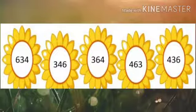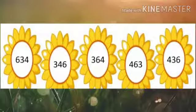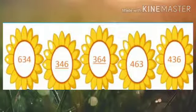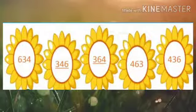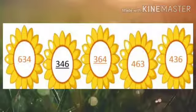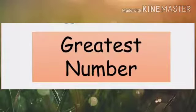Here are some more numbers: 634, 346, 364, 463 and 436, and we have to find out the smallest number. As I told, first we will see the 100th place. Which digit in the 100th place is smaller? Yes, 3 — but here we can see two numbers with the same digit in the 100th place. So we need to see the digit on the 10th place. That is 4 and 6. 4 is smaller than 6. So the number 346 is the smallest number.